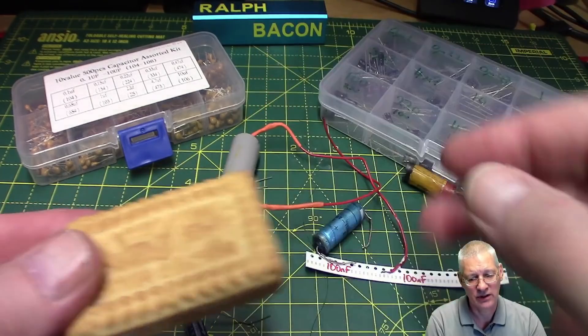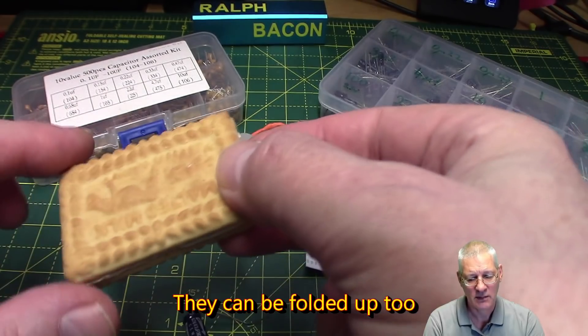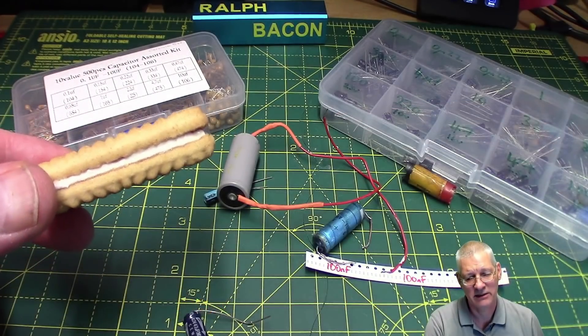But of course, they don't have to be cylinders. And indeed, the smaller ones are not. But that's a good way of thinking about a capacitor. Two plates, conductive plates, held apart by a thin dielectric layer.